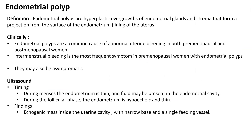Endometrial polyps are hyperplastic overgrowth of endometrial glands and stroma that form a projection from the surface of the endometrium. Clinically, endometrial polyps are a common cause of abnormal uterine bleeding in both premenopausal and postmenopausal women. Intermenstrual bleeding is the most frequent symptom in premenopausal women with endometrial polyps. However, endometrial polyps may be asymptomatic.